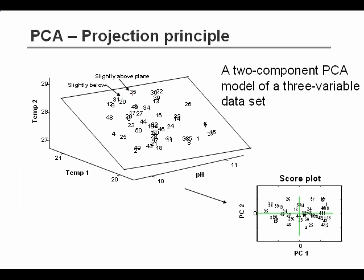And we can describe, in this case, almost perfectly the variation in these three different variables by a plane, so a two-dimensional coordinate system. And that plane, if we project all the points into the plane, is exactly our score plot.